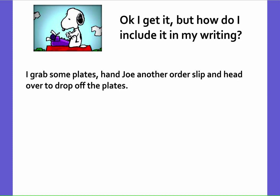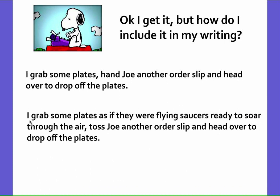Here's an example. Original sentence: I grab some plates, hand Joe another order slip, and head over to drop off the plates. Here's how I add figurative language: I grab some plates as if they were flying saucers, ready to soar through the air — toss Joe another order slip, and head over to drop off the plates. Here is my simile: I'm comparing the plates to flying saucers, and that gives you a more imaginative idea when you read my writing.